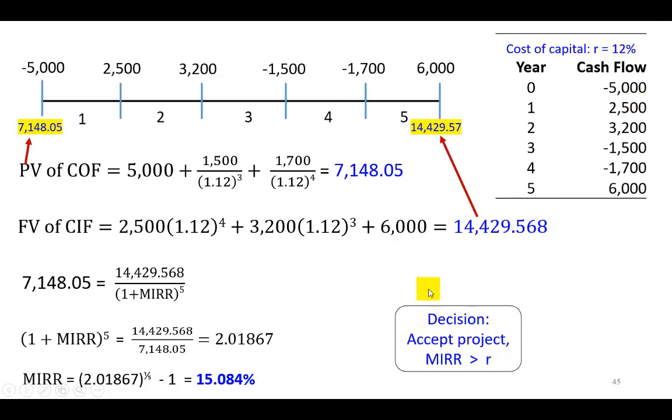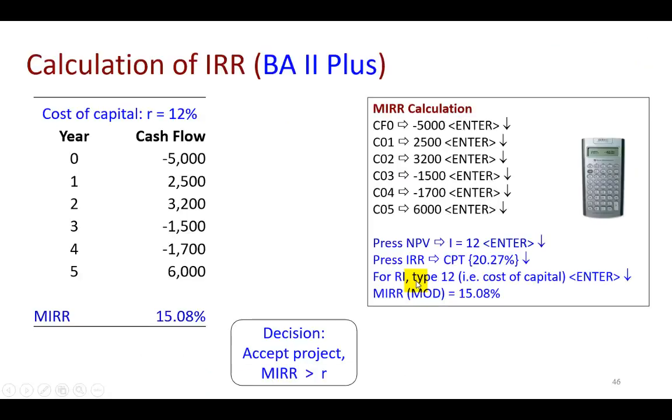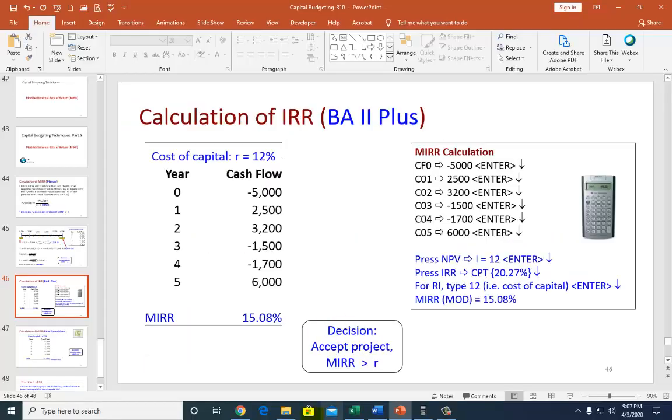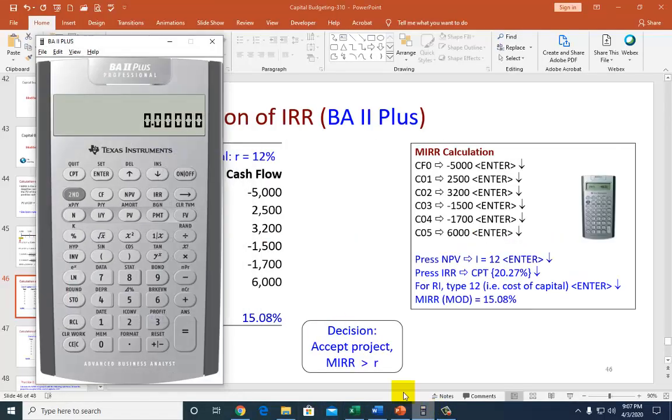I know you're saying, what a tedious manual calculation. Can we use the financial calculator, please? And the answer is, at your pleasure. So let's bring it up and put in the cash flows. So we click on cash flow. And the first thing we do is clear it, which is a second function. So second, clear work. So now put in these.